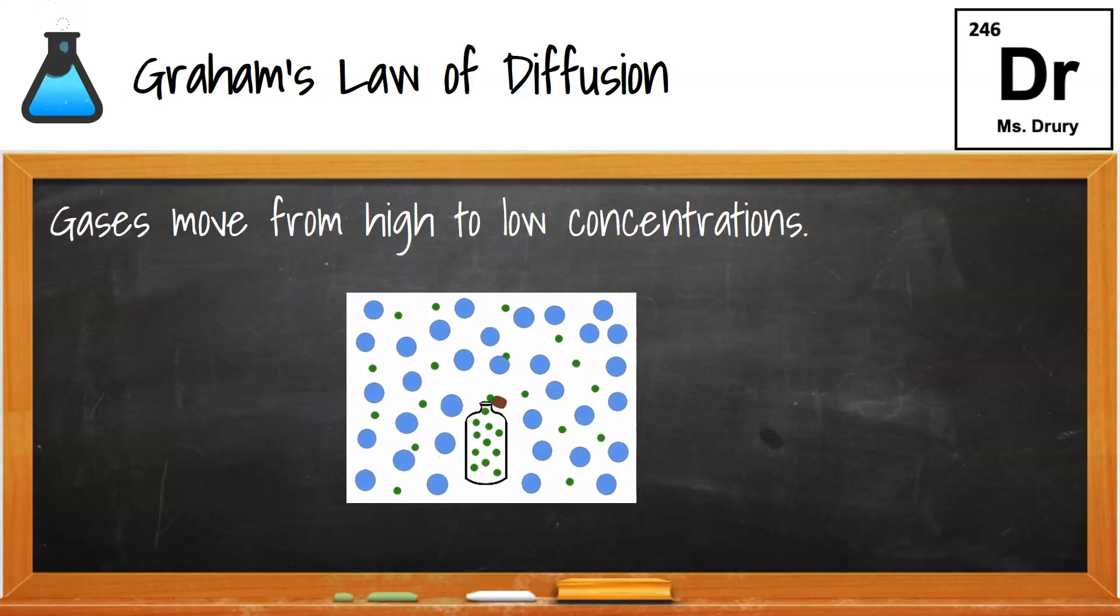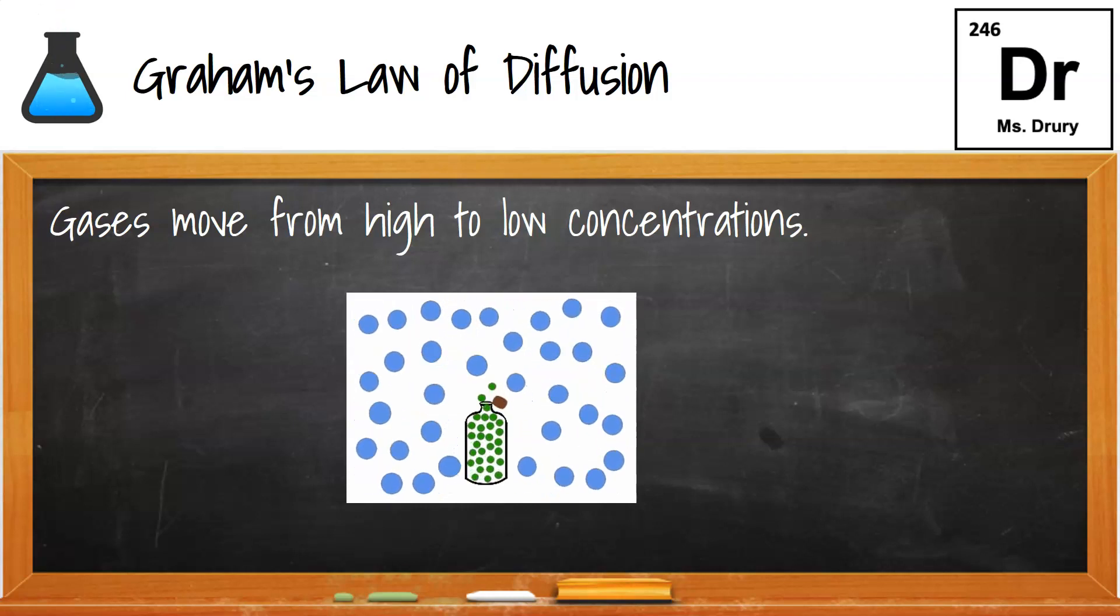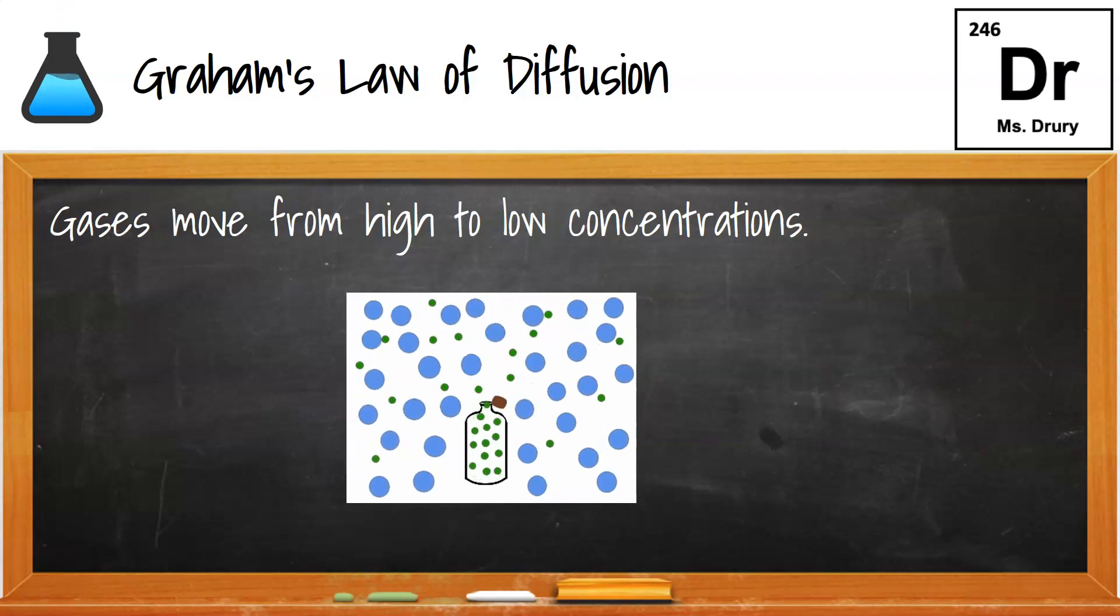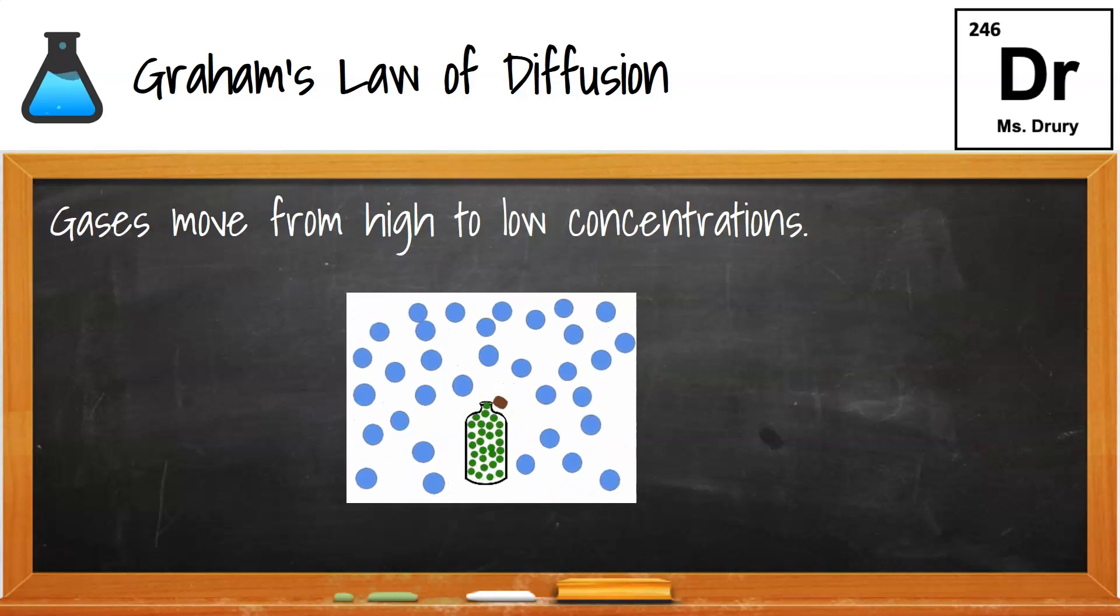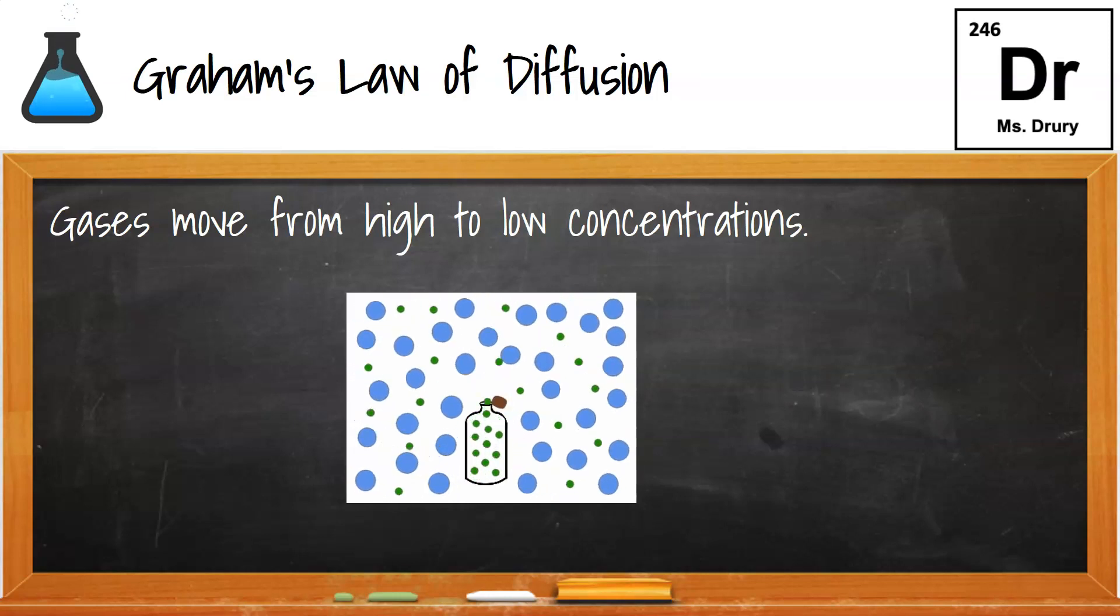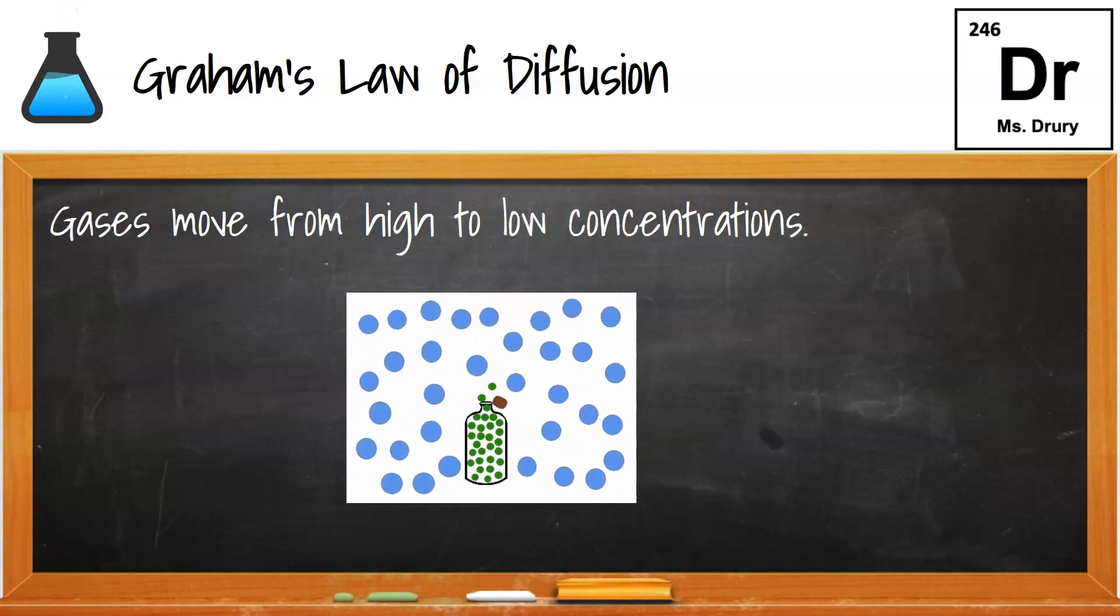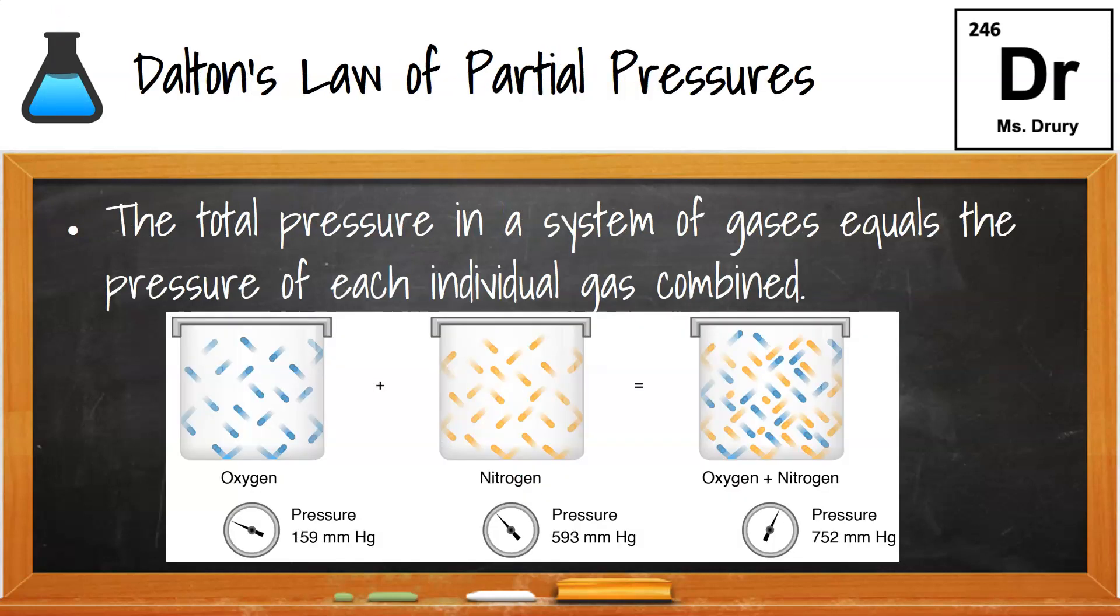Graham's law of diffusion is just saying that gases always move from high to low concentrations, where they were to where they're not. So you can see in the picture, all the green moved out to where the blue is. Technically, after a little while, the blue might even try to go into the container if it can fit. And we talked about that near the beginning of the video.